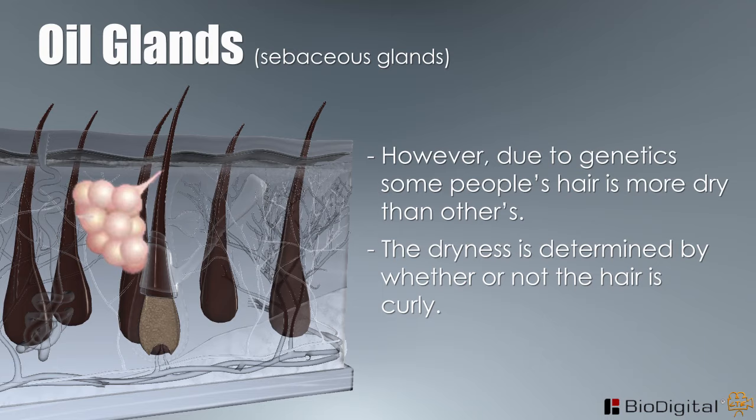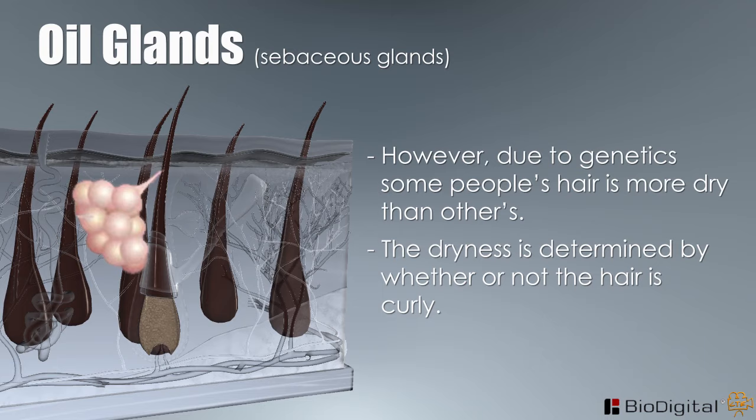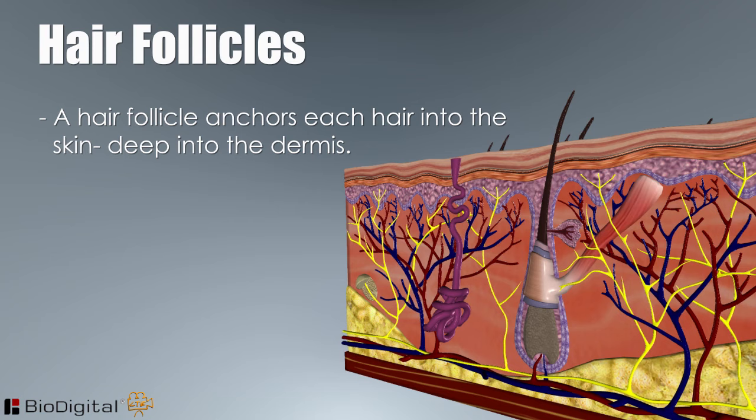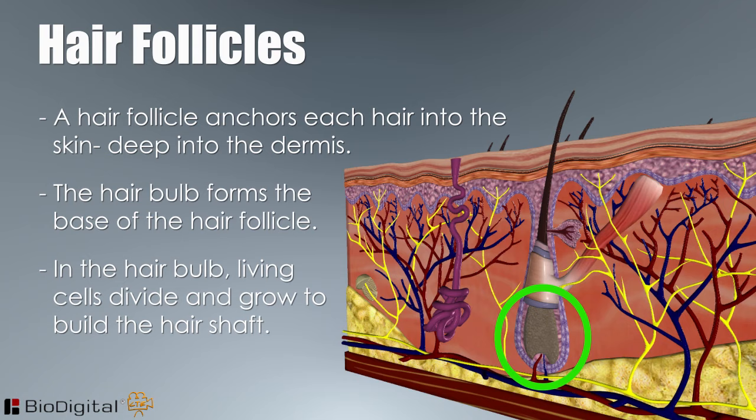A hair follicle anchors each hair into the skin, deep into the dermis. The hair bulb forms the base of the hair follicle. In the hair bulb, living cells divide and grow to build the hair shaft. The hair shaft is the hair that projects from the skin or scalp.